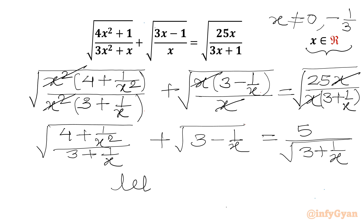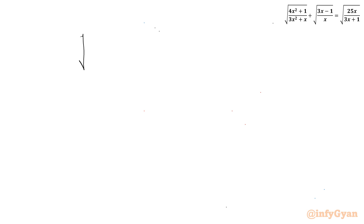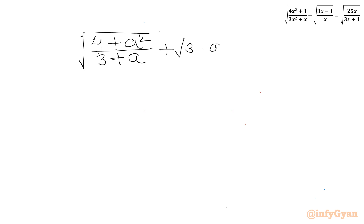Now let us assume 1 over x equals a, and a cannot be 0. Applying this substitution, our equation becomes: square root of (4 plus a²) over (3 plus a), plus square root of (3 minus a), equal to 5 over square root of (3 plus a).